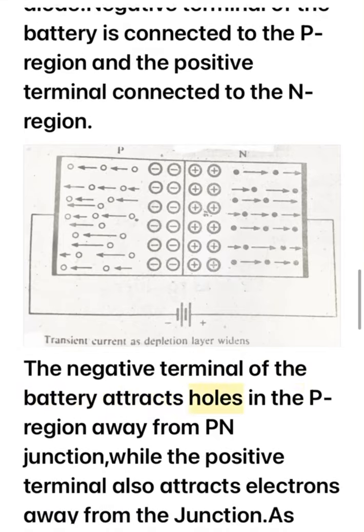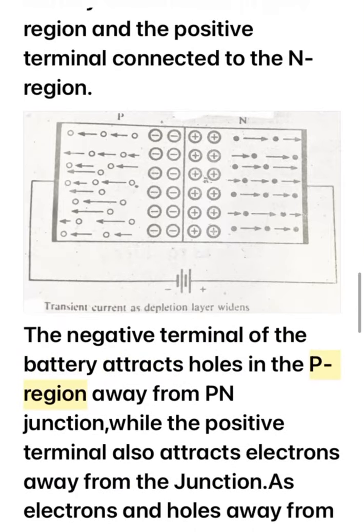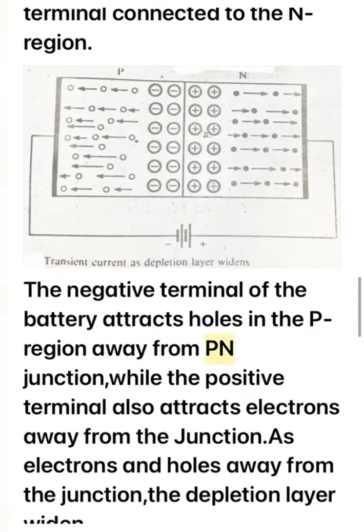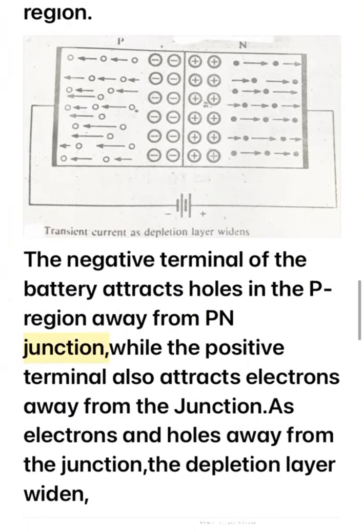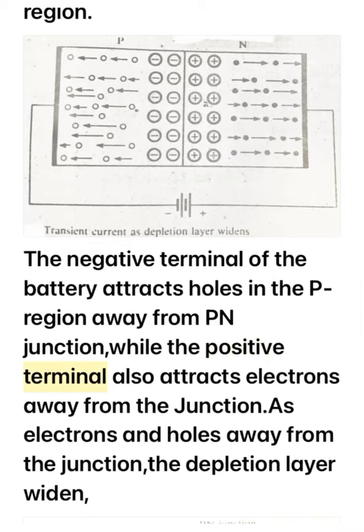The negative terminal of the battery attracts holes in the P region away from the P-N junction, while the positive terminal also attracts electrons away from the junction, pulling electrons and holes away from the junction.